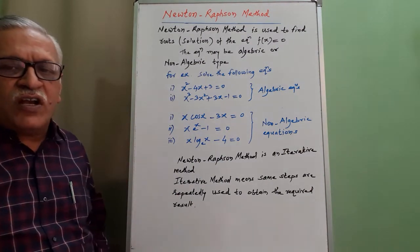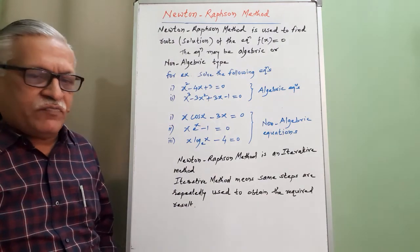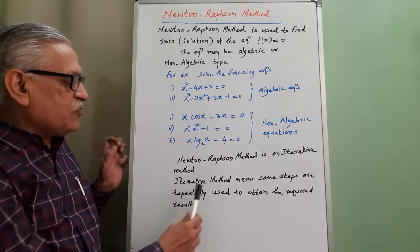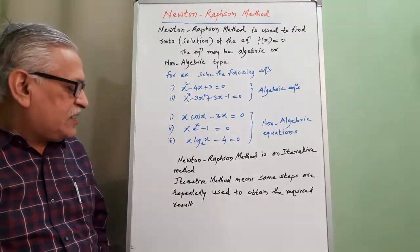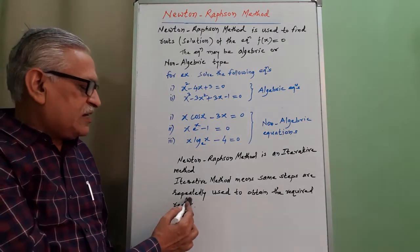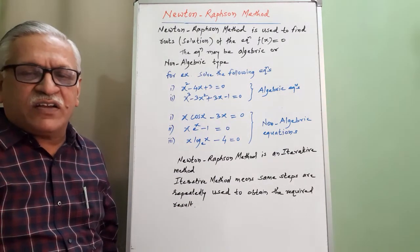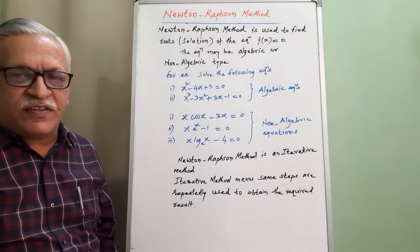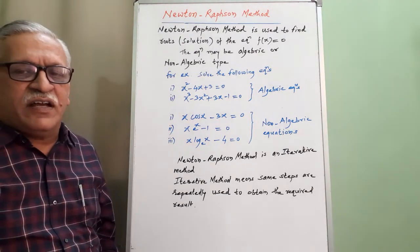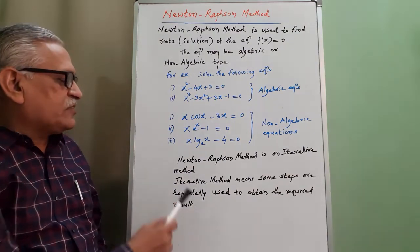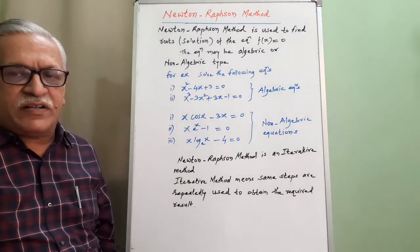The Newton-Raphson method is called an iterative method. Iterative means the same steps are repeated again and again until we get the required root or result. That type of procedure is called an iterative procedure. Therefore, the Newton-Raphson method is an iterative method.